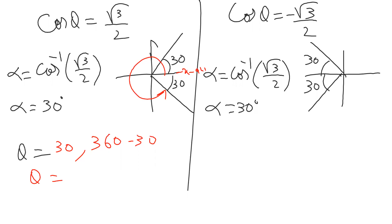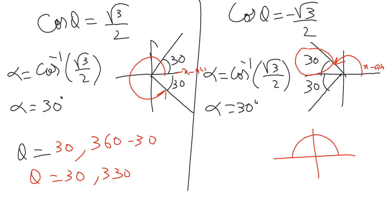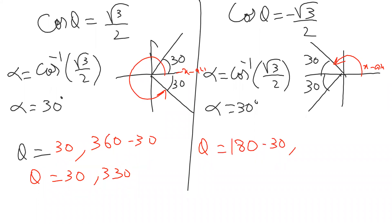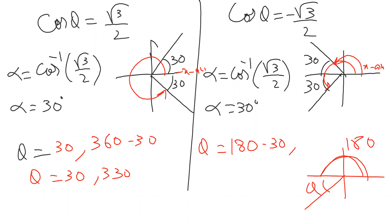For cos θ = −√3/2, starting from the positive x-axis to the line in Q2: a straight line is 180 degrees, and leaving out the 30 gives 180 − 30 = 150 degrees. For the second answer, moving forward past 180 degrees plus 30 gives 180 + 30 = 210 degrees. So the two answers are 150 and 210.